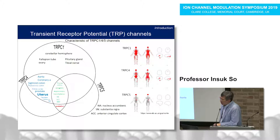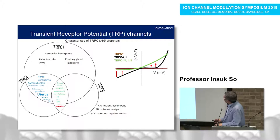So at the tissue level, the channel exists as a heteromeric TRPC1/4 or TRPC1/5 channel, rather than homomeric TRPC4 or TRPC5 channel.